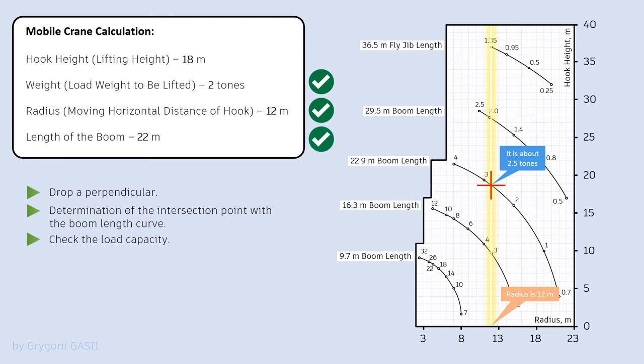Now it remains only to check whether the mobile crane satisfies the requirement for the hook lifting height. To do this, from the point of intersection of the curve and the first perpendicular, the second perpendicular to the vertical axis is dropped. It is 18.7 meters, which satisfies the calculated value.